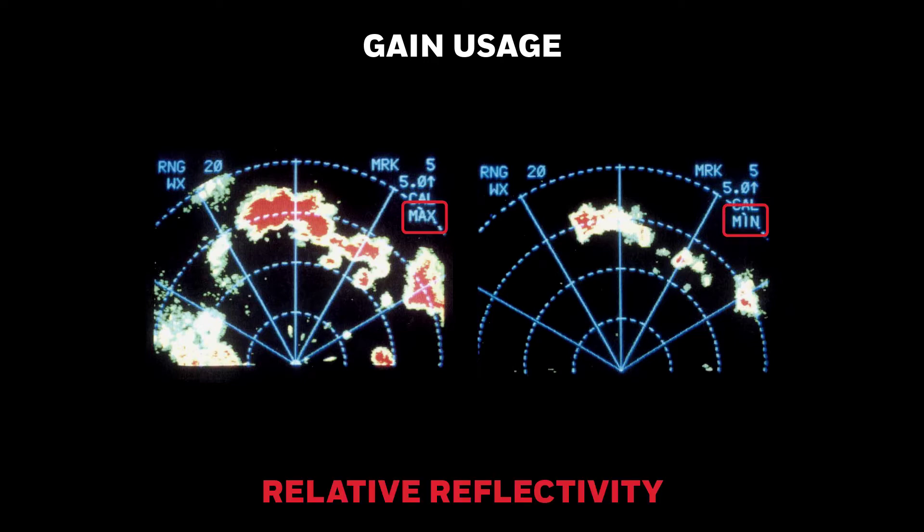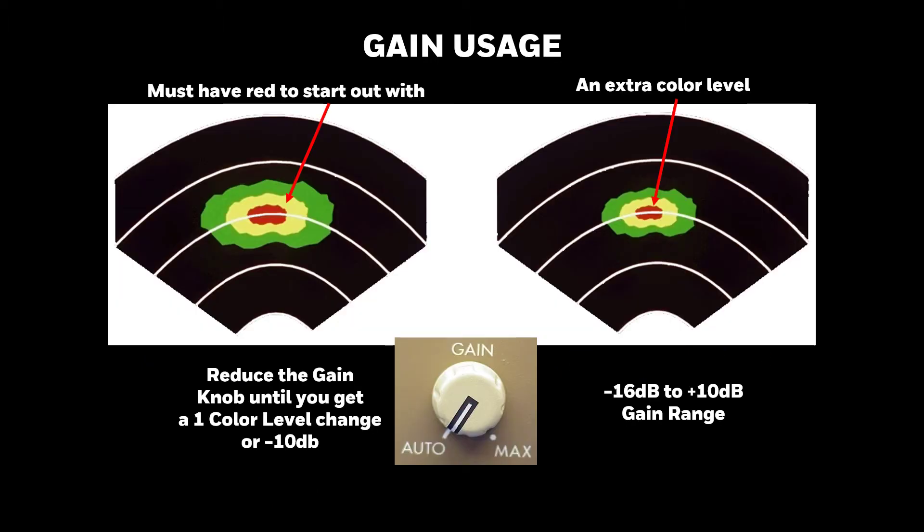Gain reduction has several uses. When looking at groups of cells, reducing the gain shows the relative intensity between the cells, leaving the strongest cells and turbulence indications because gain doesn't affect turbulence detection. Also, using gain reduction, you can effectively create another color level.